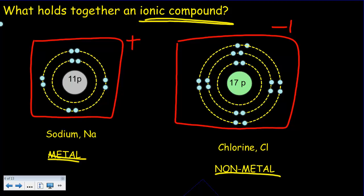And of course when a negative and a positive are close together they attract each other, and it's that attraction between positive and negative, between the positive ion and the negative ion, that forms the bond and holds the two ions together.